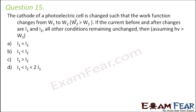Question number 15: The cathode of a photoelectric cell is changed such that the work function changes from W1 to W2. If the current before and after the change are I1 and I2, all other conditions remaining unchanged, what is the relation? The work function was W1 and now it is W2, meaning the work function has increased. The current was I1 and now it is I2.